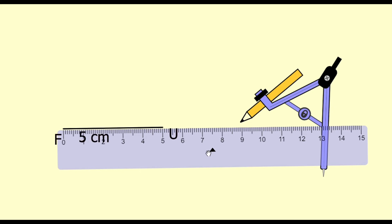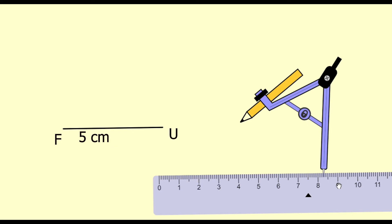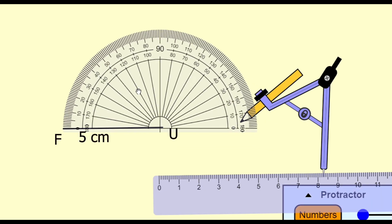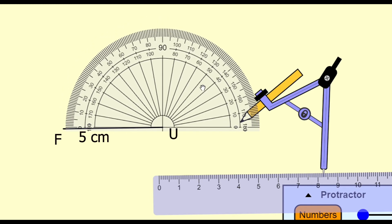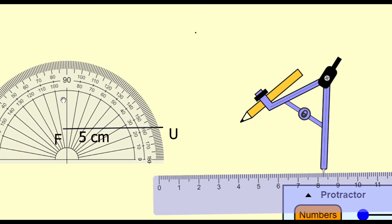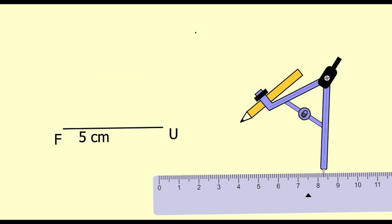Write down the measure 5 centimeters. Angle U is 110 degrees, so we will keep the protractor at U and draw an angle of 110 degrees. We have marked it and now we will join it to U. This is angle U of 110 degrees.